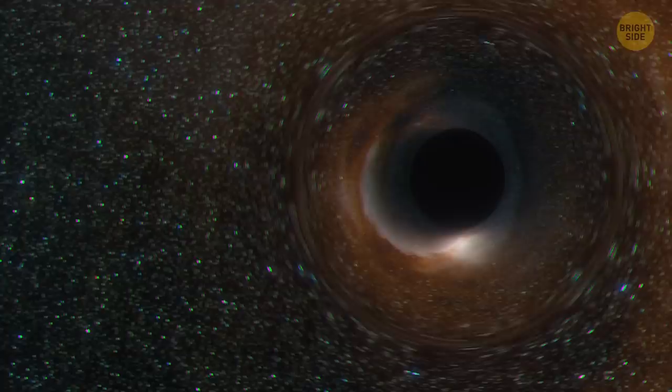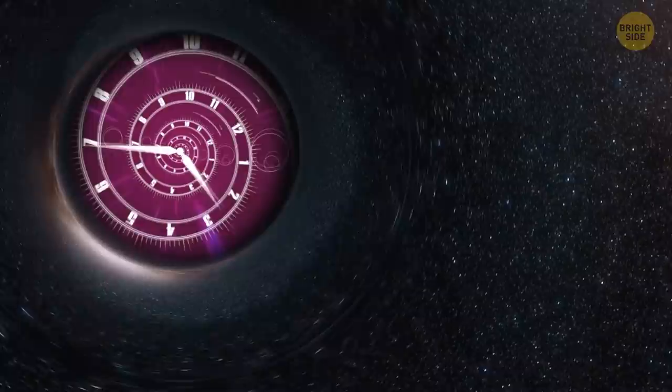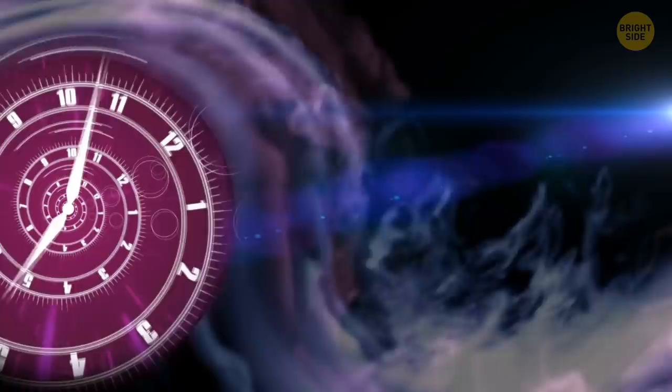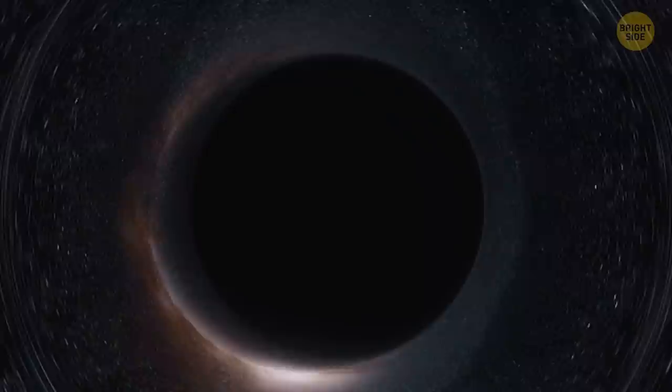But when it comes to gravitational lenses in space, they bend not only the light, but also the flow of time. The rules are simple. The bigger and heavier the object, the slower time flows near it. So, if you find a supermassive black hole and can get to its heart, time can practically stop for you. One minute near a black hole can be equal to weeks or even months on Earth.